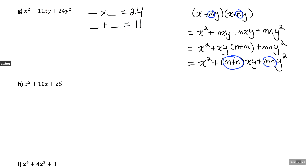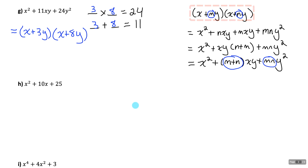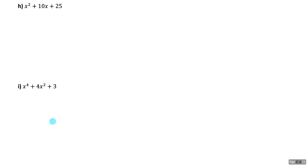The numbers that satisfy a product of 24 and a sum of 11 are 3 and 8: 3 times 8 is 24, and 3 plus 8 is 11. In factored form we add 3y and 8y to the x's inside the binomials, giving x plus 3y times x plus 8y. You can expand to verify this returns to the original expression.